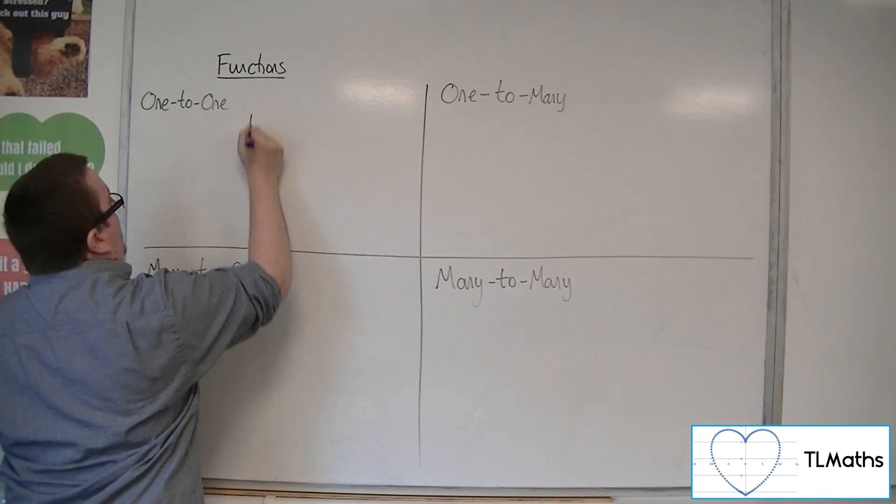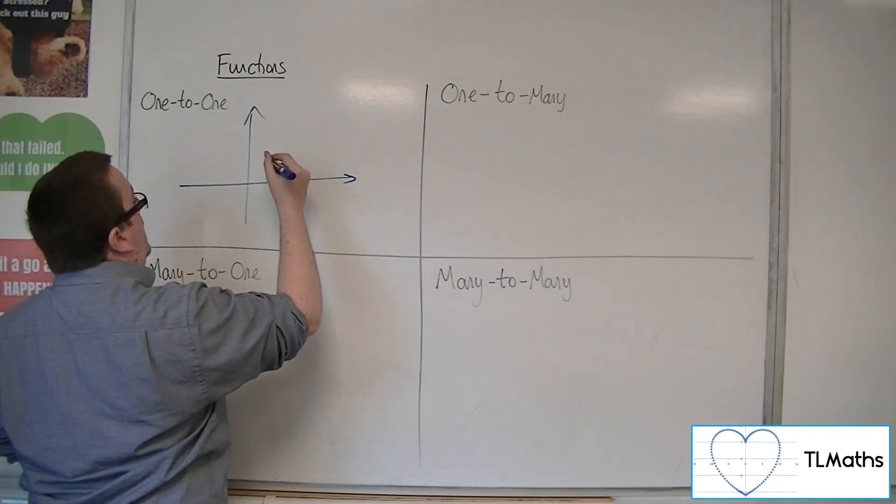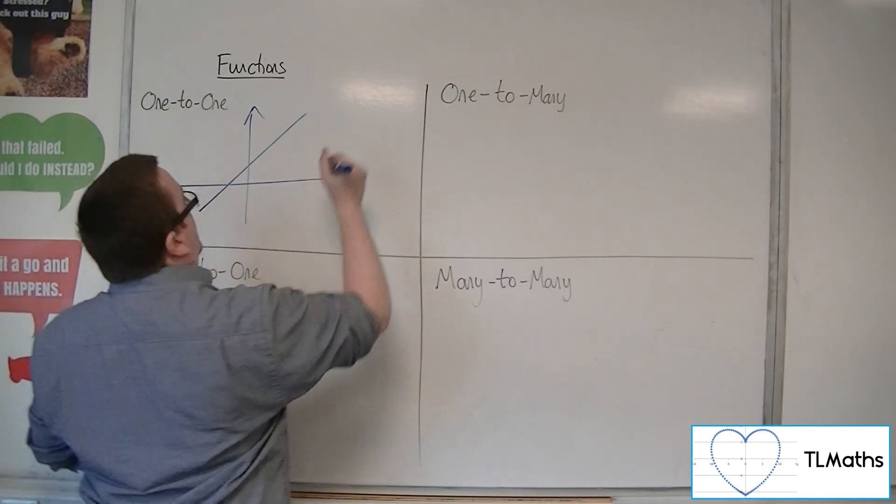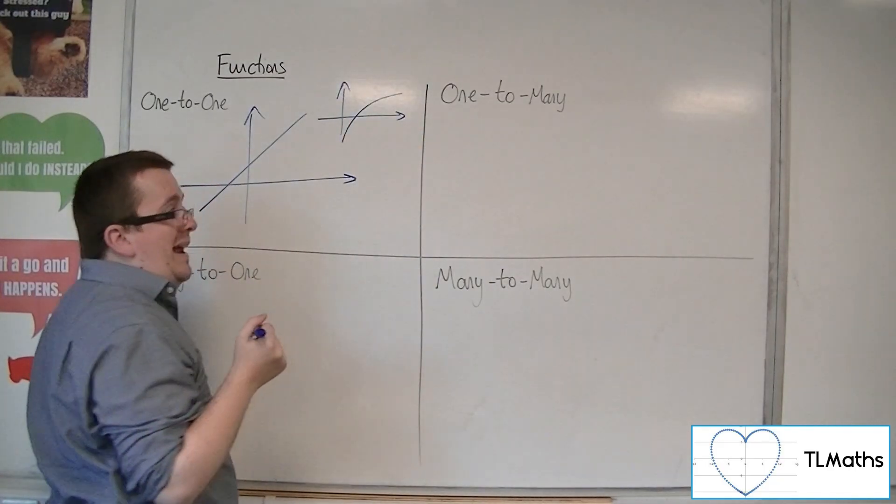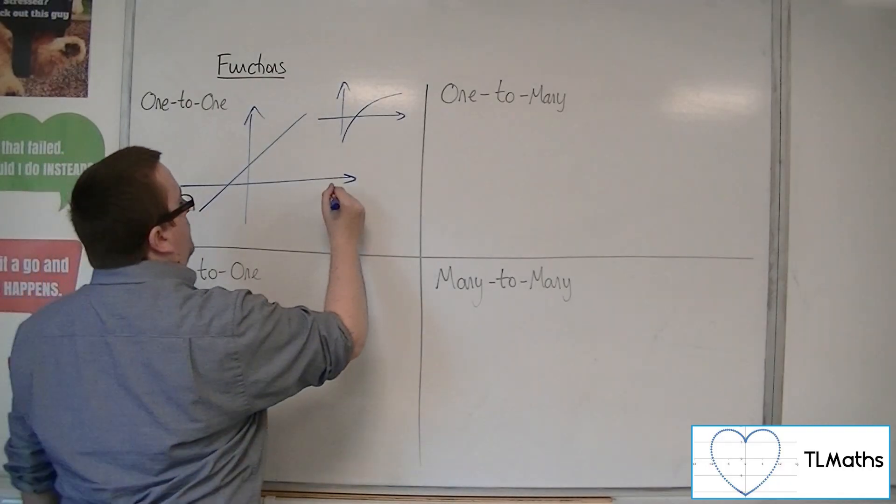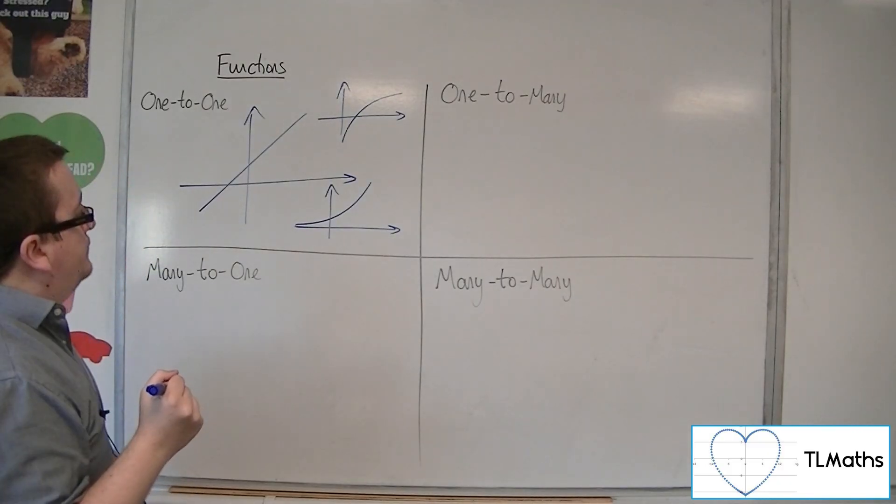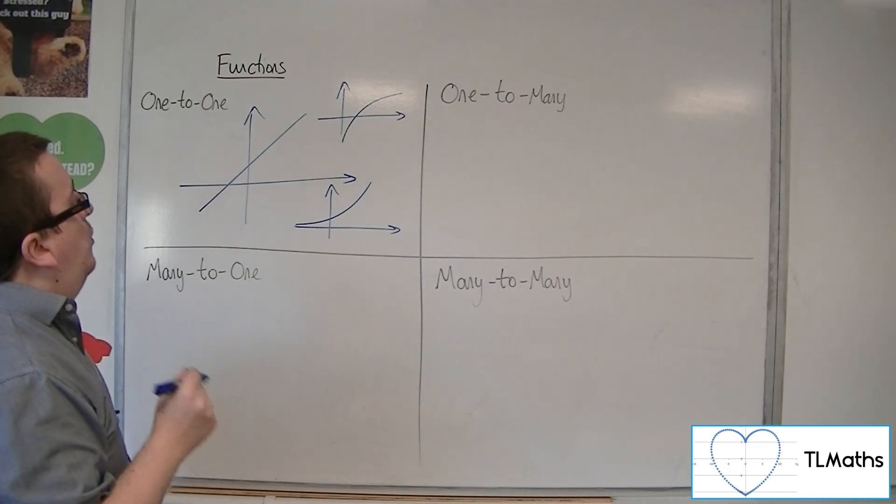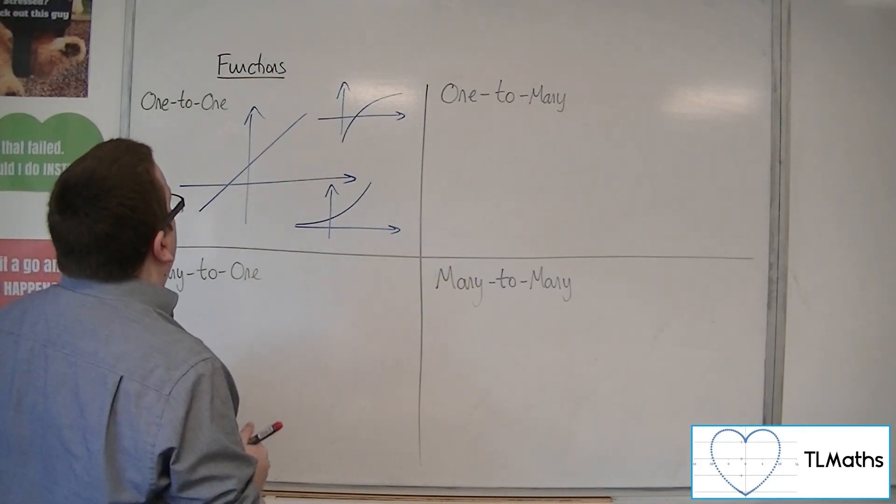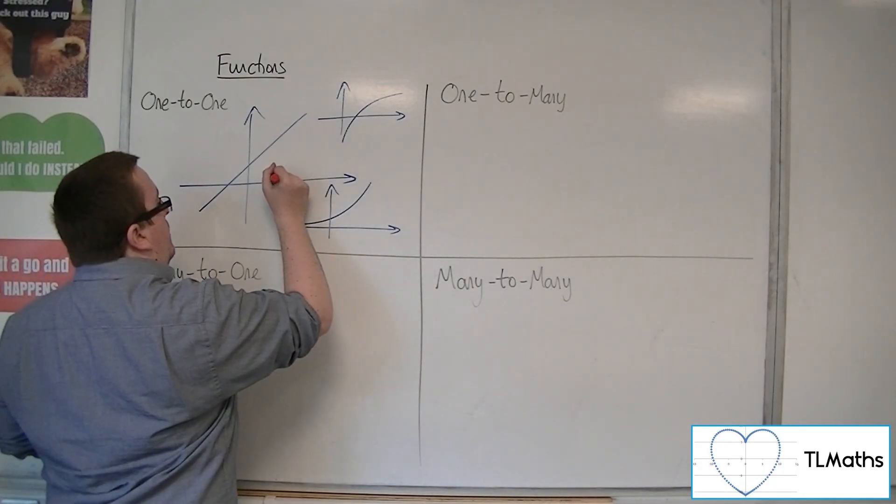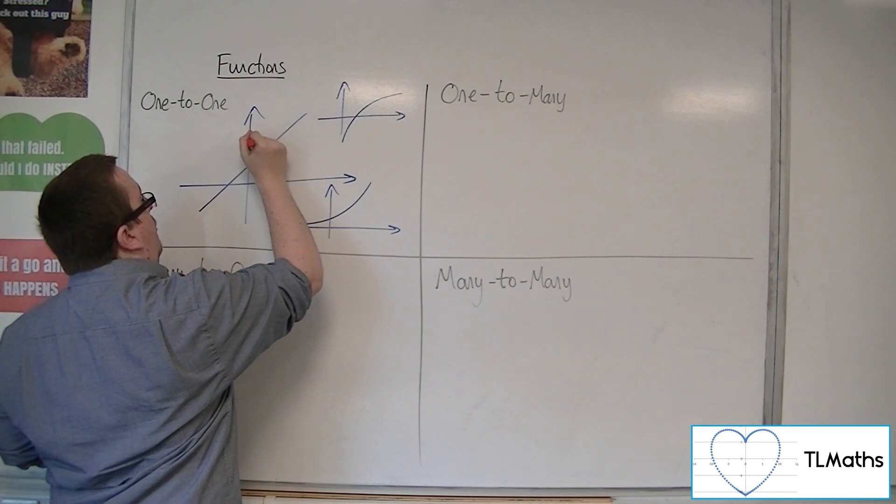An example of this would be something like a straight line graph, or you could have y equals ln x, or y equals e to the x. These are all examples of one-to-one graphs. The reason being is that for each value of x, there is only one value of y.